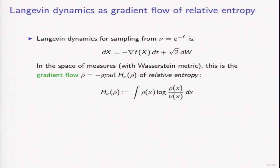The Langevin dynamics for sampling from a target measure nu, which is of the form E to the minus F, is the following stochastic differential equation, which looks like the noisy version of gradient flow perturbed by Gaussian noise. It's not obvious from just staring at this equation that this works for sampling from E to the minus F. But if you view this in the space of measures, this is actually performing the gradient flow dynamics of an objective function, which is relative entropy or KL divergence with respect to the target measure. This is really the reason why Langevin dynamics works for sampling.